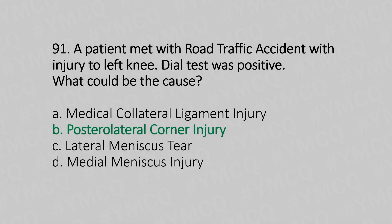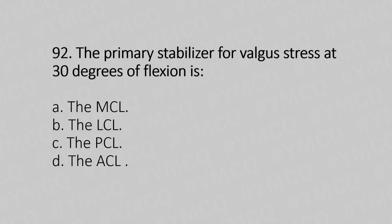Let's move to question number 92. The primary stabilizer for valgus stress at 30 degrees of flexion is: Option A, the MCL. Option B, the LCL. Option C, the PCL. Option D, the ACL. The answer is Option A, the MCL.